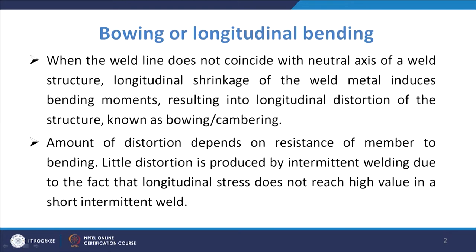The amount of distortion depends upon the resistance of the member to bending — how much resistance it is offering. Based on that, the amount of distortion will depend. As we know, certain properties of the material or structure tell us what the resistance to bending will be. Those properties are taken into account while calculating bowing or bending.